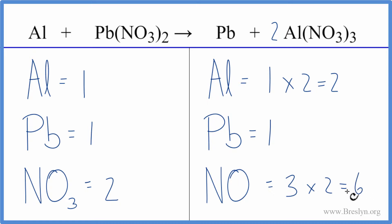That'll give me six of the nitrates. Then I can come over on this side, and I need to have a three here. That'll give me two of the nitrates times the three. That gives me six.